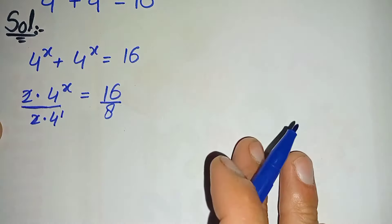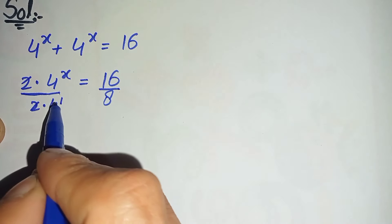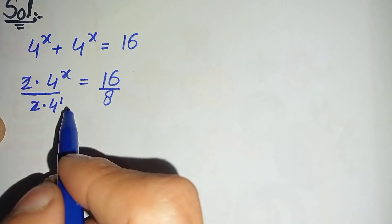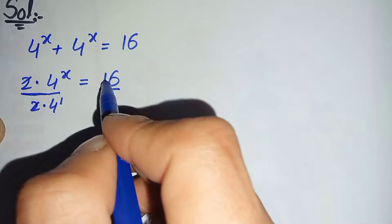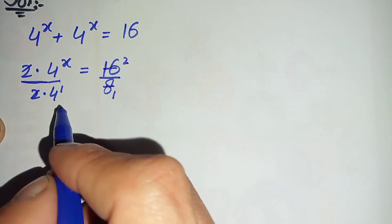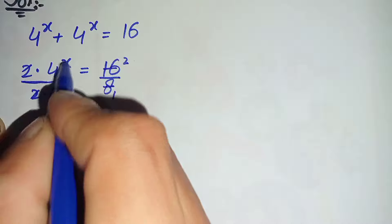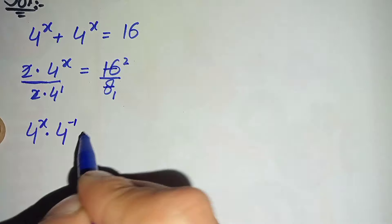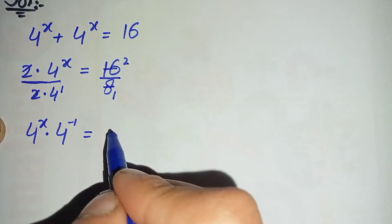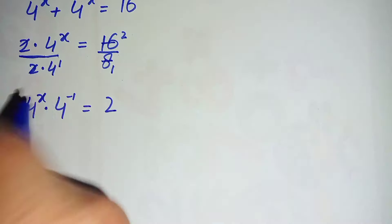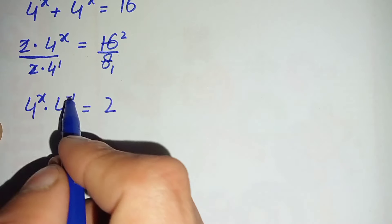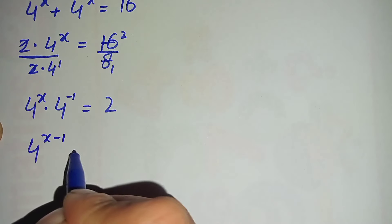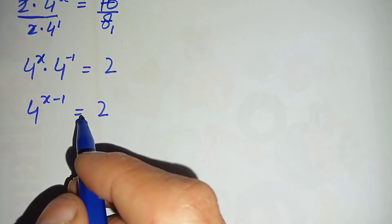Here we use an exponential math property: the denominator 4 to the power 1 shifts to the numerator, so the sign of its power changes to negative. This gives us 4 raised to power x times 4 raised to power negative 1 is equal to 2. Since the bases are the same, we add the powers: 4 raised to power x minus 1 is equal to 2.